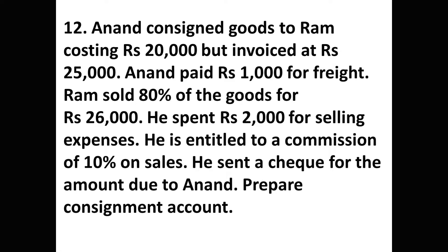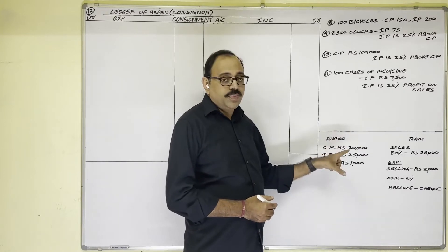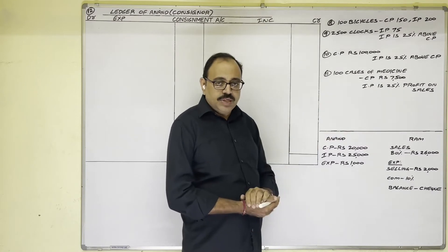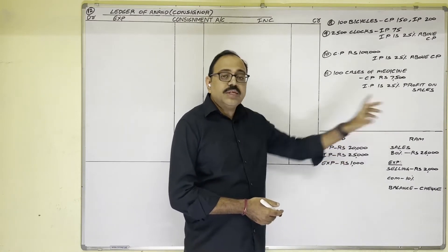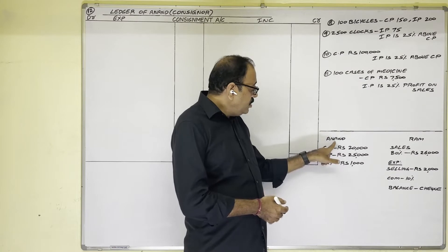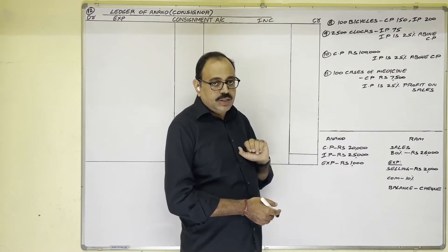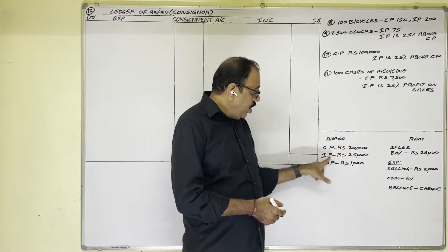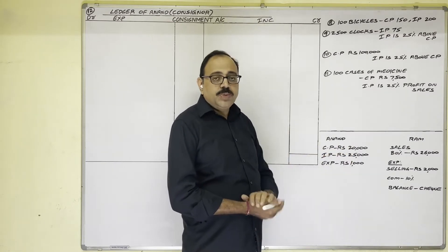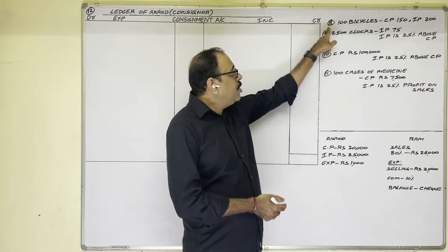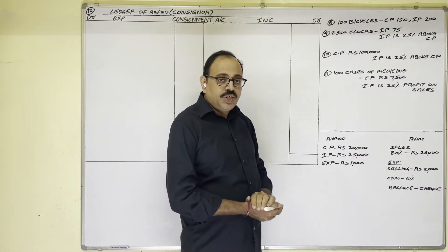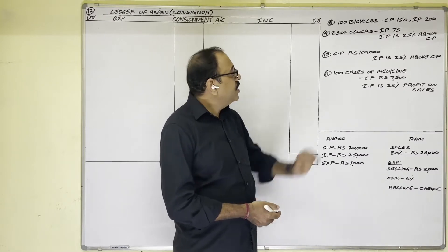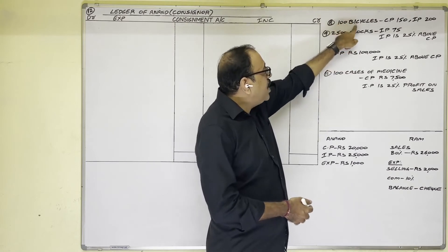Let us see the solution. The important points: Anand and Ram are involved in consignment business. Anand is the consignor and Ram is the consignee. Anand sent goods to Ram on a consignment basis. The cost price of goods is 20,000 and the invoice price is 25,000. Recall from previous problems — from the 8th problem onwards, invoice price information has been given in different forms. In problem 8, it was given as quantity: 100 bicycles, one bicycle cost price 150, invoice price 200.